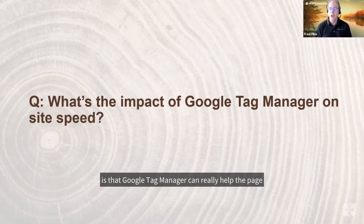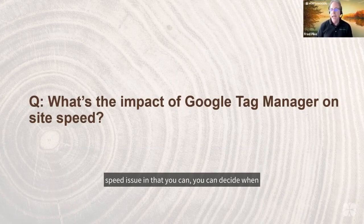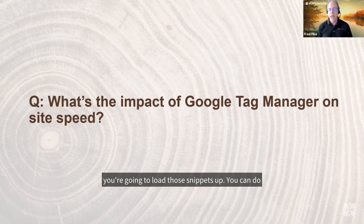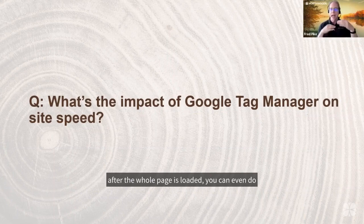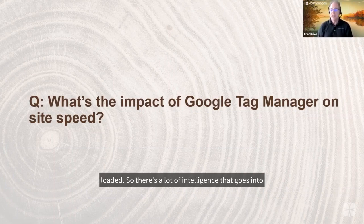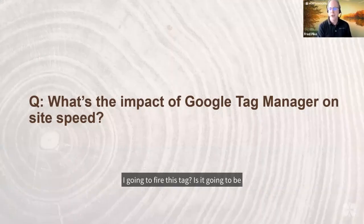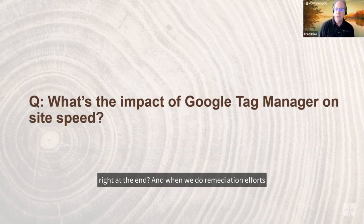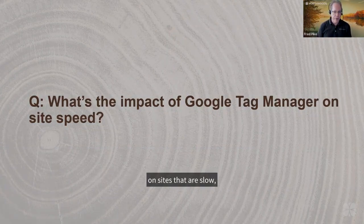Google Tag Manager can really help the page speed issue in that you can decide when you're going to load those snippets. You can do it very early in the process, in the middle of the process, after the whole page is loaded, or even one or two seconds after the page is loaded. There's a lot of intelligence that goes into Google Tag Manager in terms of deciding when to fire a tag — right at the beginning or right at the end — and when we do remediation efforts on sites that are slow.